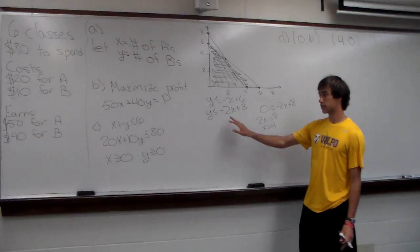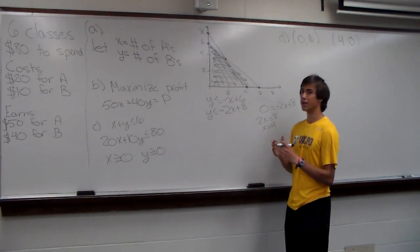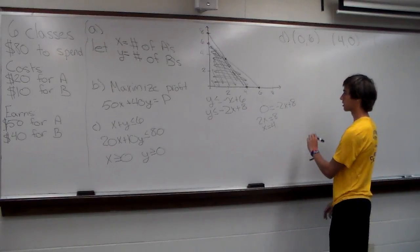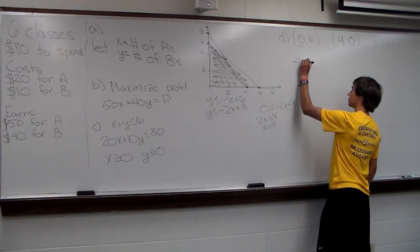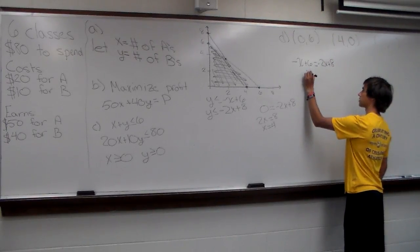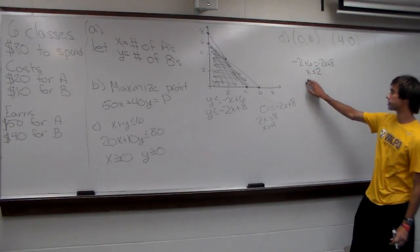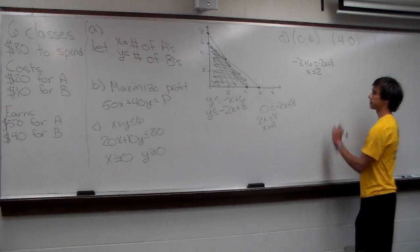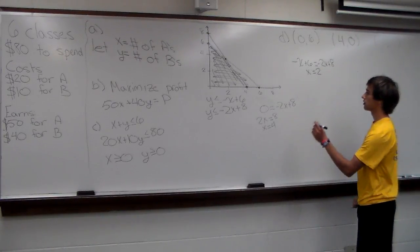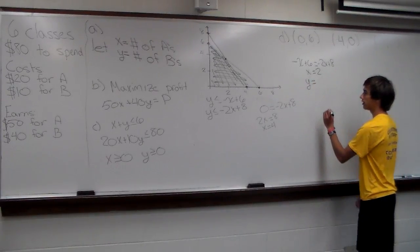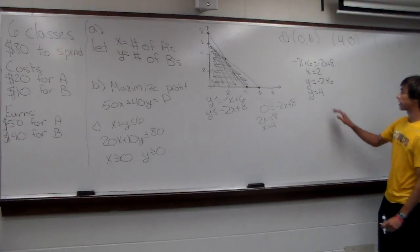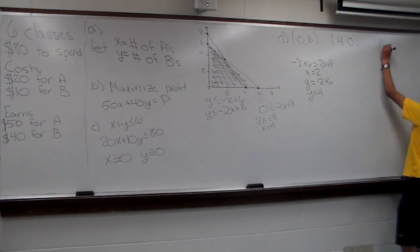To find the intersection precisely, we solve the system of equations by setting -X + 6 = -2X + 8. Adding 2X to both sides and subtracting 6 from both sides gives X = 2. Substituting X = 2 into the first equation: Y = -2 + 6 = 4. So the last corner point is at (2, 4).